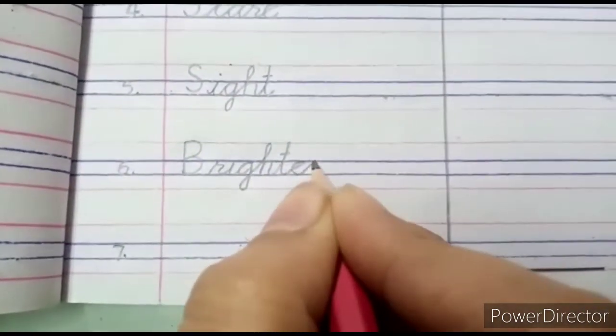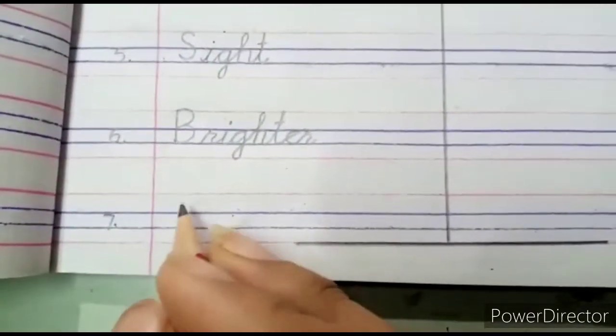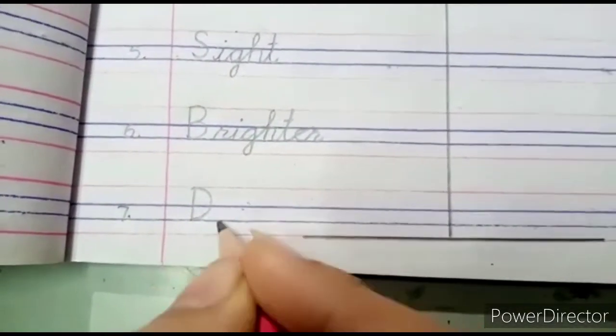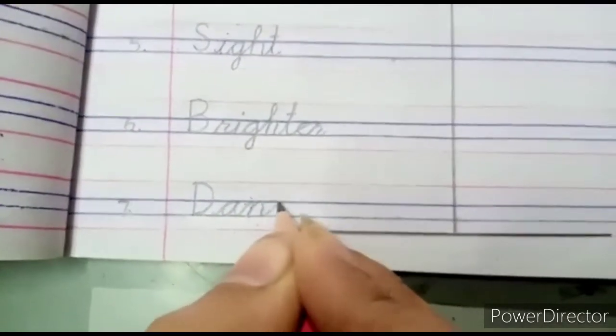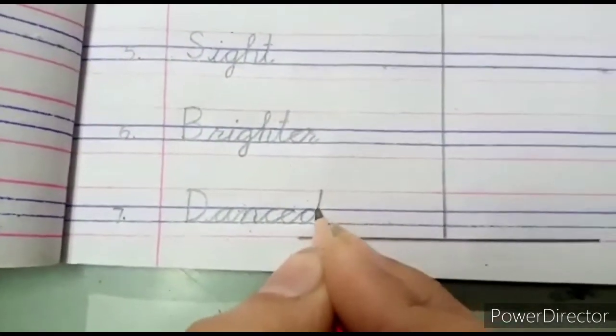Number 7 is dance. Dance, first you have D-A-N-C-E dance and then you have danced. Okay, this is your total 7 words. You will follow it as well.